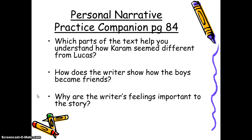So first of all, which parts of the text help you understand how Karam seemed different from Lucas? We could see that possibly the description of Karam's clothing and his personality. Next question: how does the writer show how the boys became friends? He explains how they taught each other different things. The author could have easily said that the two boys were friends and not really shown how they became friends. But showing how they became friends helps us understand the importance of writing with good detail and helping the reader understand everything the author wants us to understand.